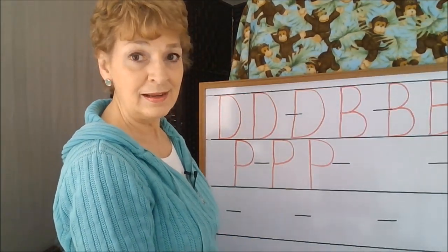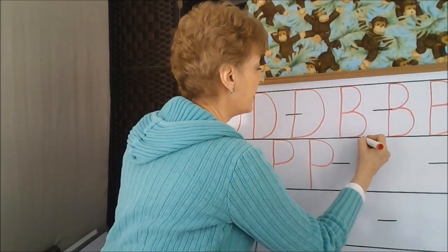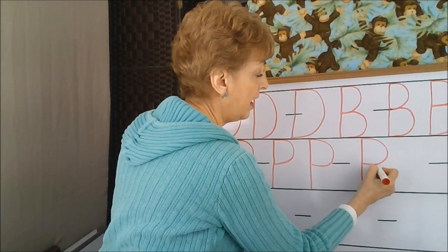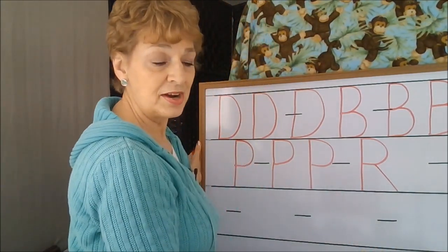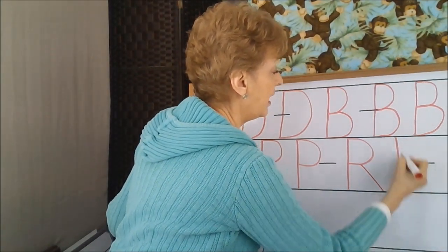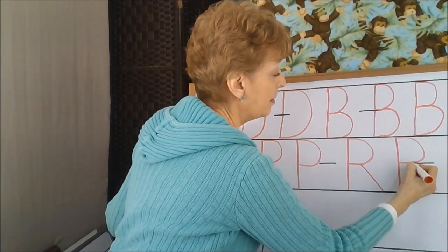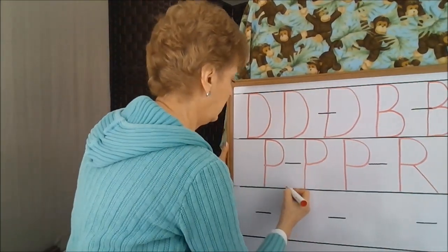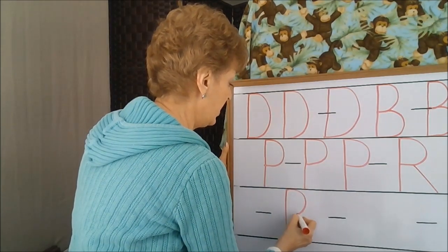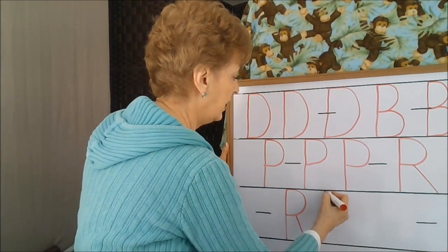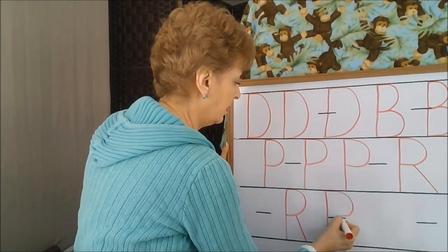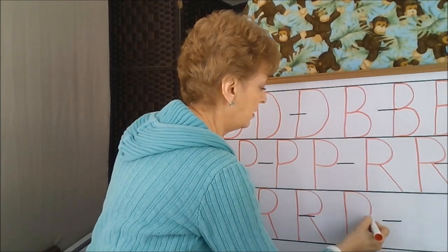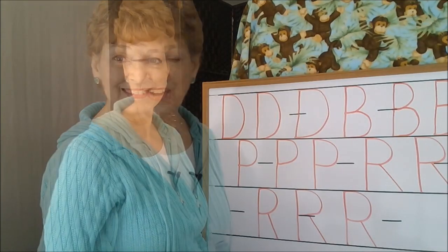If you can make a capital P, you can make a capital R, because it starts out the same way. Here's the capital P, and then we start about here on the bump and make a diagonal — that's an R. We're going to start out and make the uppercase P, and then about here, give it a diagonal line. Capital P. Capital R. And our capital letters are finished.